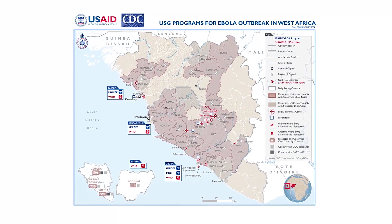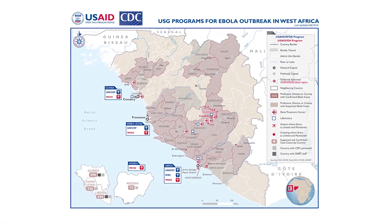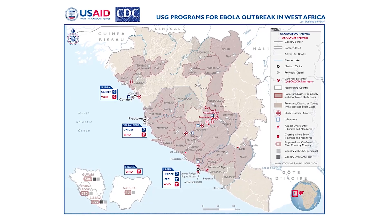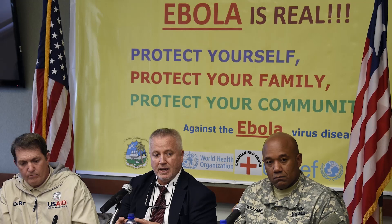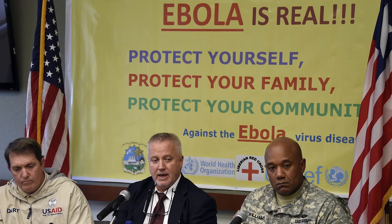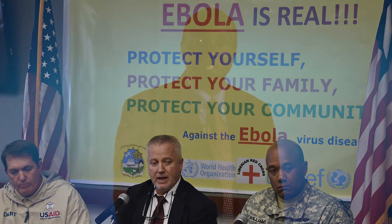The West Africa Ebola outbreak in 2014 would have been contained, but poor health infrastructure, weak surveillance systems, lack of reliable health data, and often contradicting health messages turned it into an epidemic of global proportions. The international community was caught unprepared and the consequences were grave.